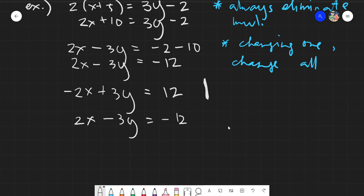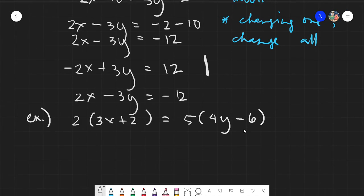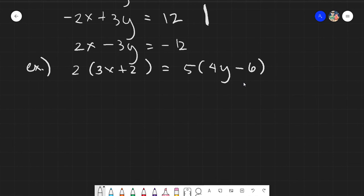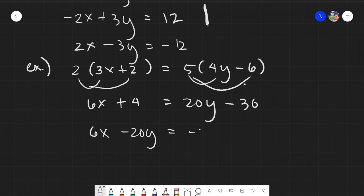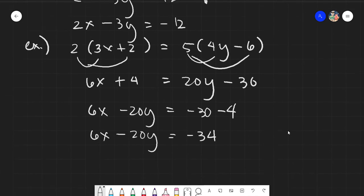So let's have another example. Say we have 2 times 3x plus 2 is equals to 5 times 4y minus 6. So you will have multiple operators here and two multiplications. So we distribute 2 and 5, giving us 6x plus 4. 5 times 4 is 20y minus 30. Then we put everything together, all x's and y's on the left side, all constants on the right side, giving us 6x minus 20y is equals to negative 30 minus 4. And finally, having the general form or standard form of 6x minus 20y is equals to negative 34.